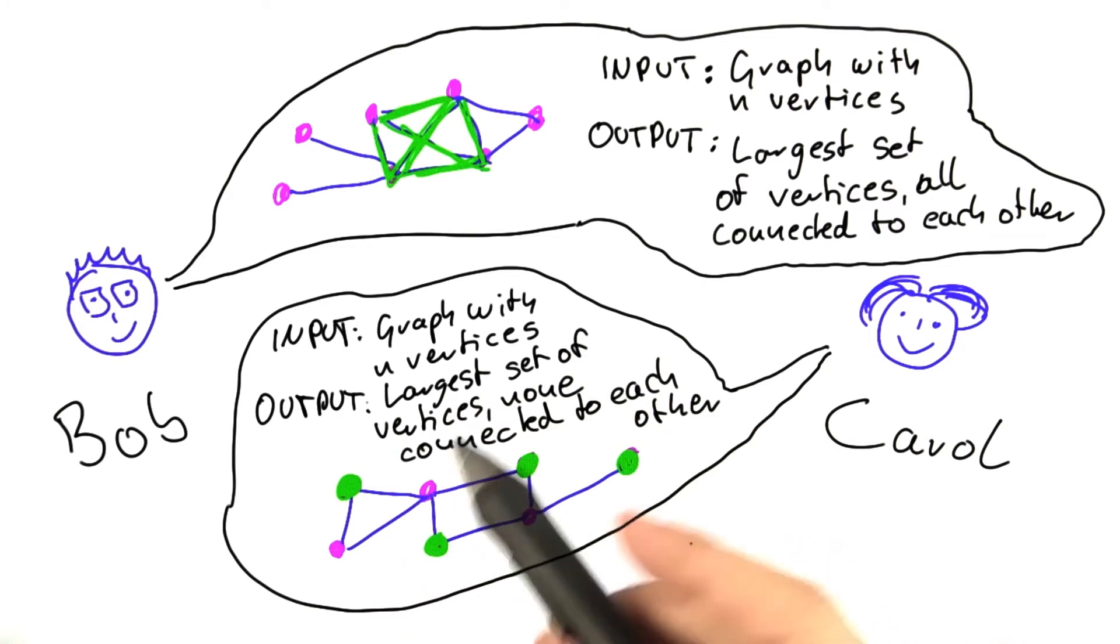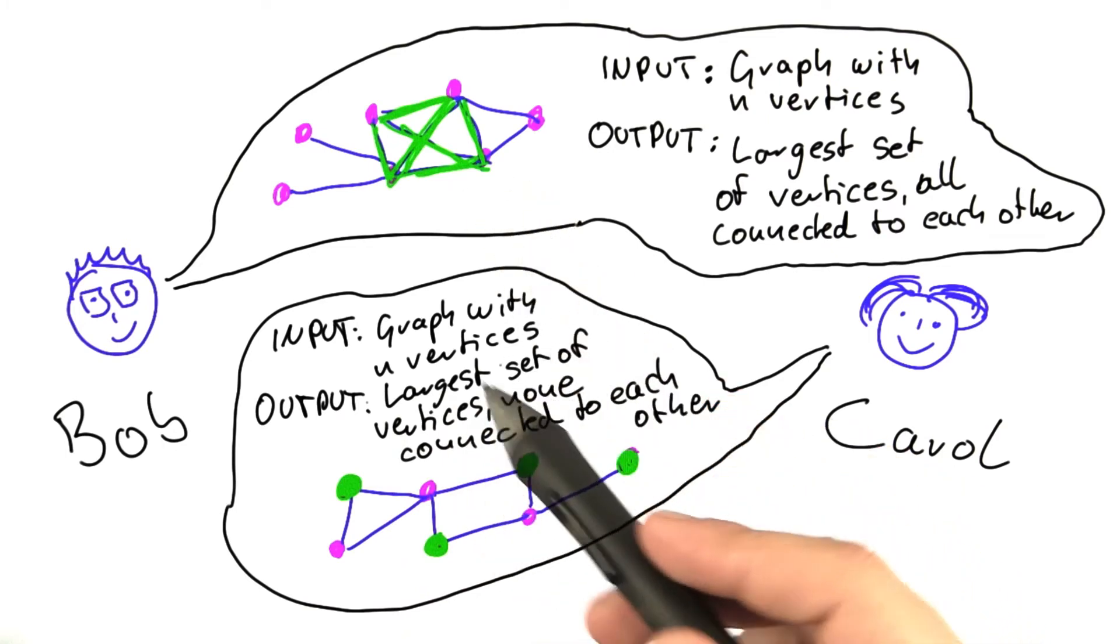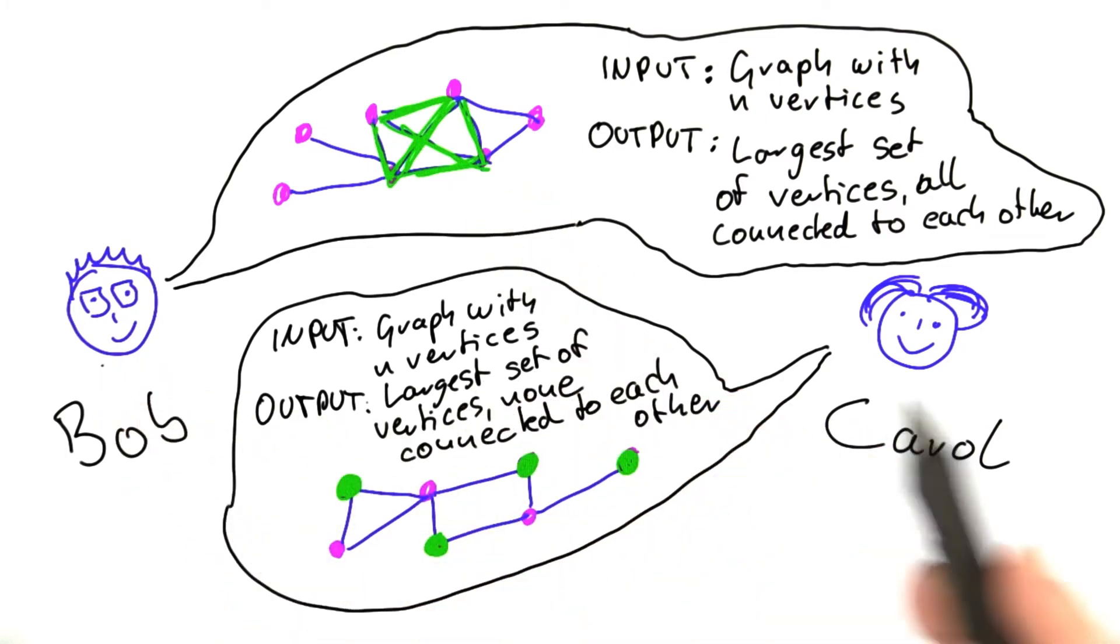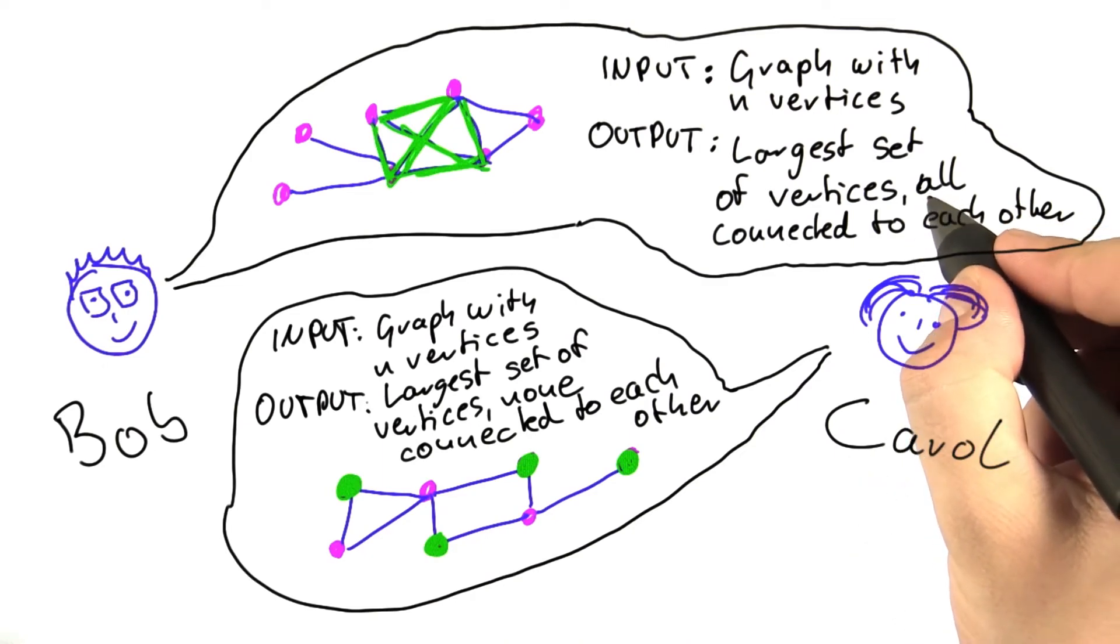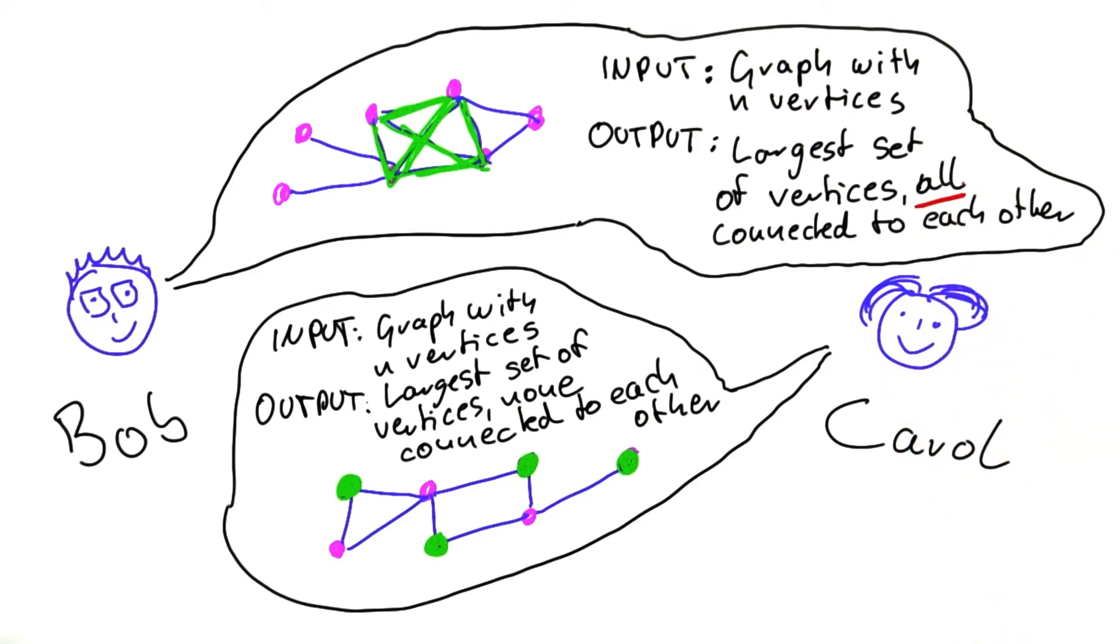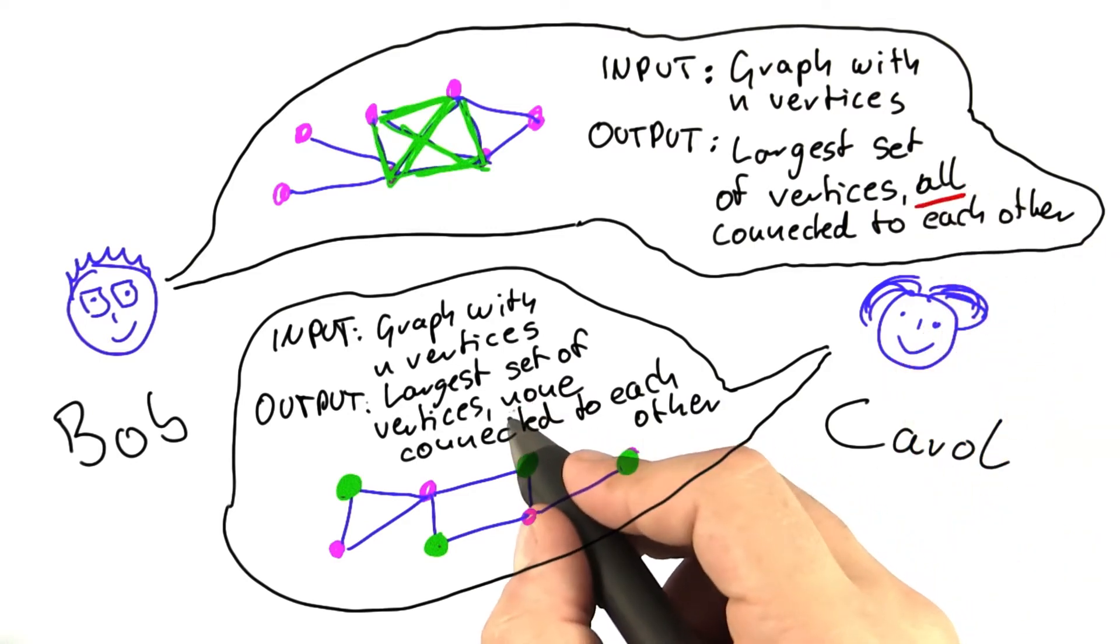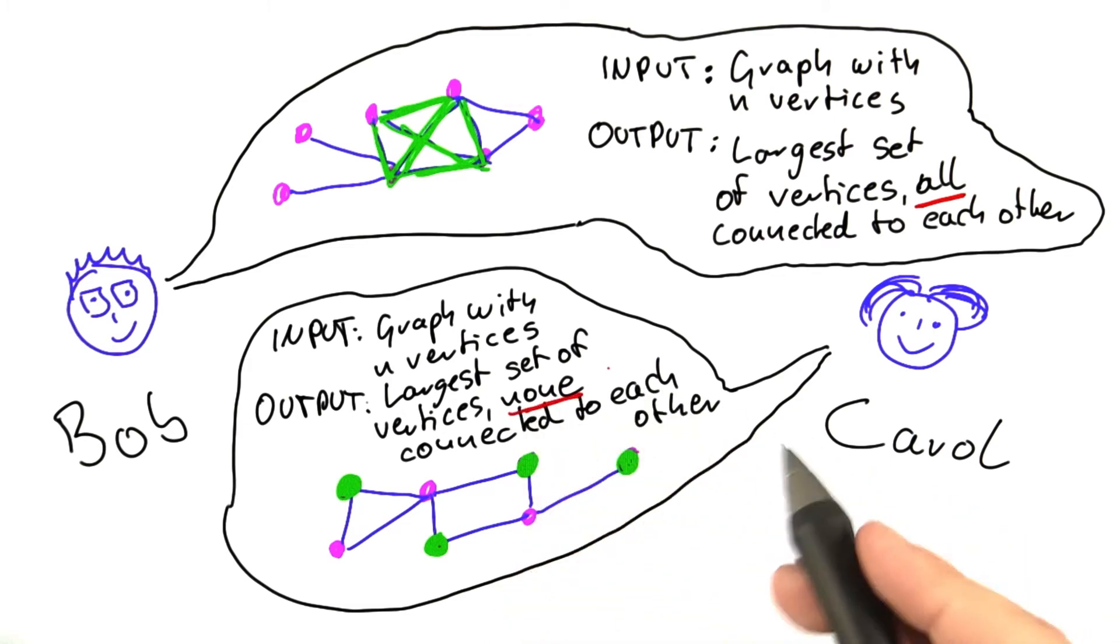So as you can see, once we use the common terminology, the problem that Bob is working on is actually very similar to the one that Carol is working on. The only difference is Bob is looking for a set of vertices where all are connected to each other, and Carol is working on a problem where none of the vertices are connected to each other.